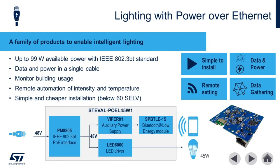Our second implementation of connected smart lighting features a novel approach using Power over Ethernet. The benefits of leveraging IEEE 802.3BT power delivery are numerous. 48 volt DC is considered low voltage and very easy for installation. Data and power are provided on the same cable. A large number of lighting nodes can be controlled remotely using Ethernet, and building data such as occupancy, temperature, and humidity can be collected from remote locations.